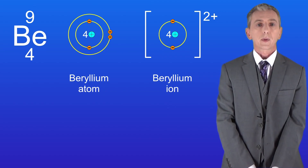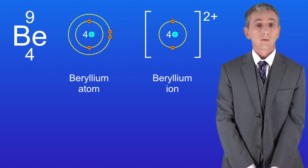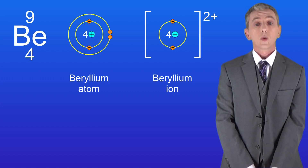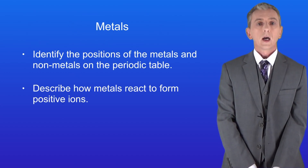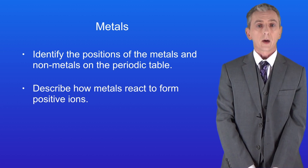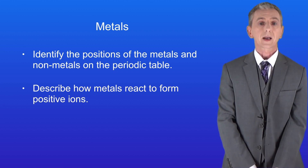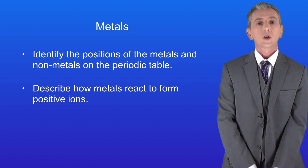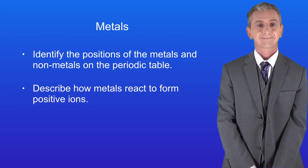Remember, you'll find plenty more questions on ions in my revision workbook, which you can get by clicking on the link above. So hopefully now you should be able to identify the positions of the metals and the non-metals on the periodic table, and you should be able to describe how metals react to form positive ions.